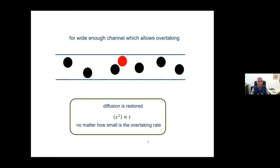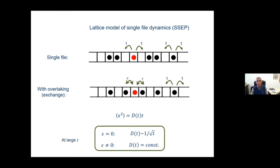Now, if you make the channel a little bit broader, so that particles can cross each other, then immediately the dynamics becomes diffusive so that x squared goes like t rather than square root of t. So no matter how small the probability of crossing, it becomes diffusive.